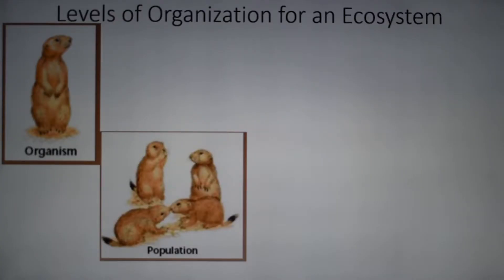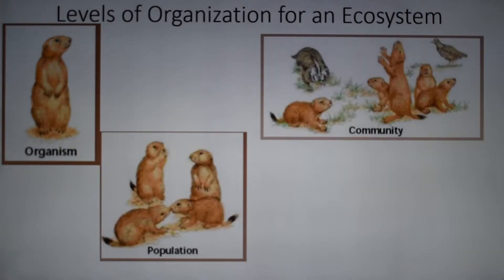Now, do prairie dogs live by themselves — just prairie dogs? No, of course not. They live with other animals, and we call that a community. Those are different species of organisms living together. Within your neighborhood, you might have trees, a garden, a cat, a dog. All of those together are your community.